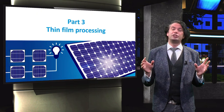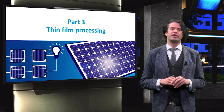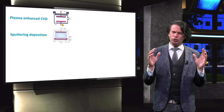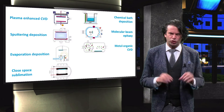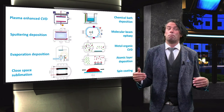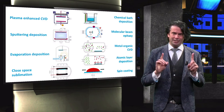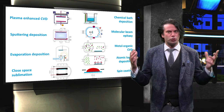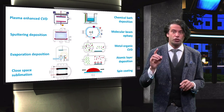In the third part of the PV2x course we discuss the processing techniques used for thin film PV technologies. These deposition tools are inherently different from the bulky wafer-based fabrication processes used for crystalline silicon. The techniques used to process a material can strongly affect the properties of the deposited material. In this section you will create an in-depth understanding of the most important tools used for the deposition of the different PV technologies discussed in this course.